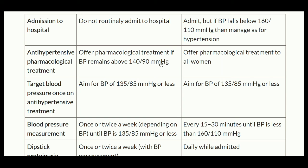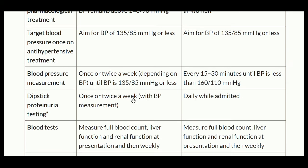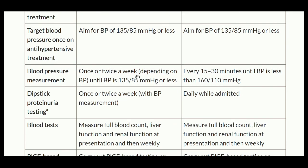For antihypertensive pharmacological treatment: in hypertension, offer treatment if BP remains above 140/90. In severe hypertension, offer pharmacological treatment to all women. The target blood pressure once on antihypertensive treatment is 135/85 or less, applicable to both hypertension and severe hypertension categories.